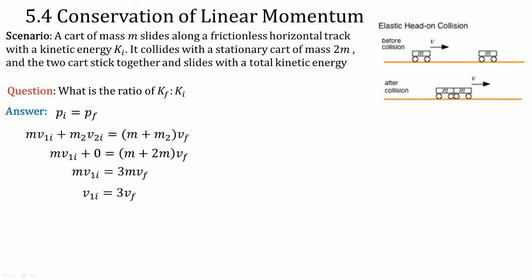This translates to the initial velocity of the first cart being equal to 3 times the final velocity. This means that the ratio of the final kinetic energy to the initial kinetic energy is 1 to 3.